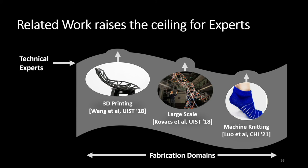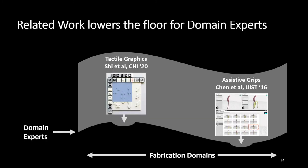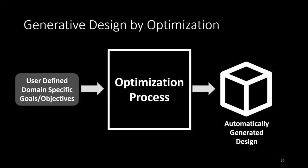There is a lot of related work on creating domain-specific tools for digital fabrication, particularly looking at expanding the ceiling for technical experts with different types of fabrication processes, and to a lesser extent, work in accessibility where we're raising the floor for domain experts who don't necessarily have technical expertise — looking at things like tactile graphics for blind people or assistive grips for people with motor impairments. Many of these have in common that they use a generative design framework where we take in user-driven domain-specific goals, run some optimization process, and output an automatically generated model that meets their needs.